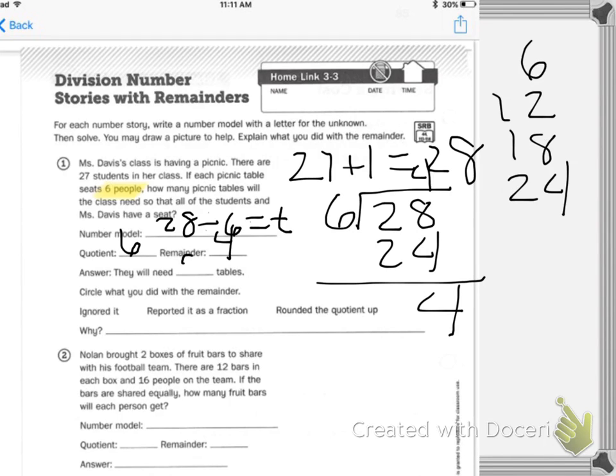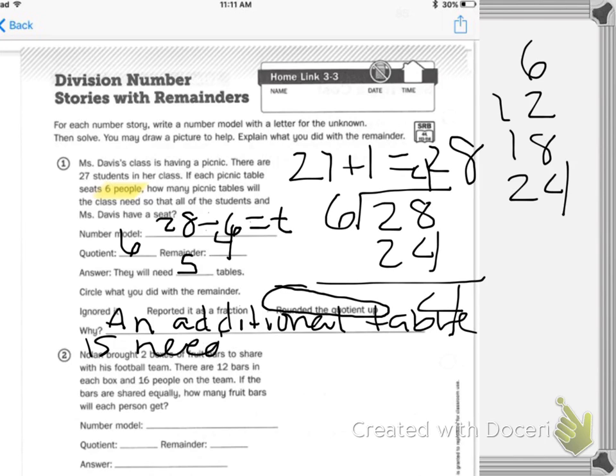So, we are going to need 5 tables and we need to round the quotient up and it's because an additional table is needed for the 4 people.